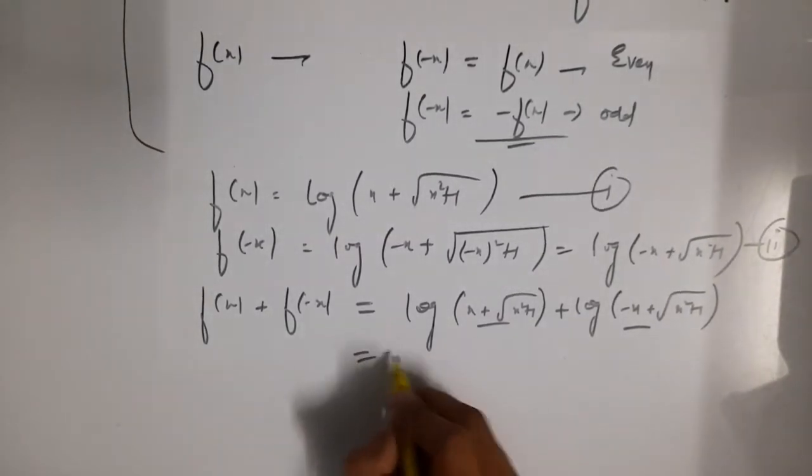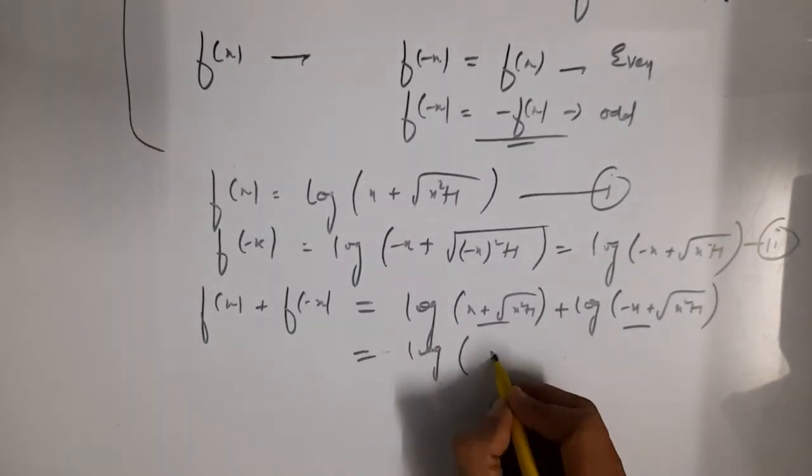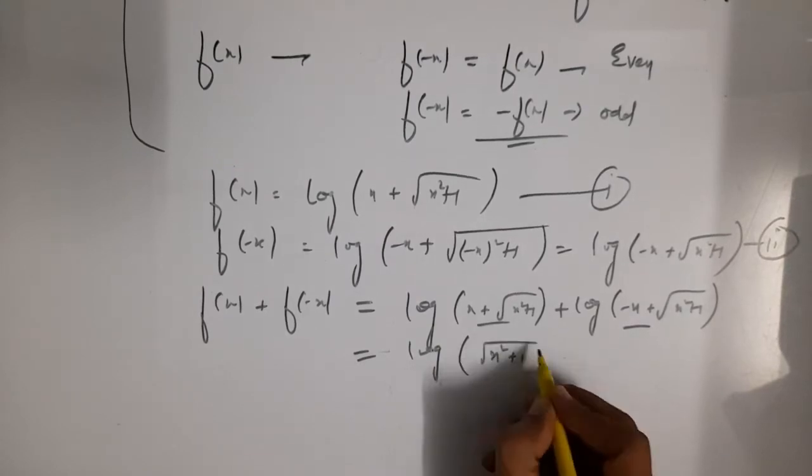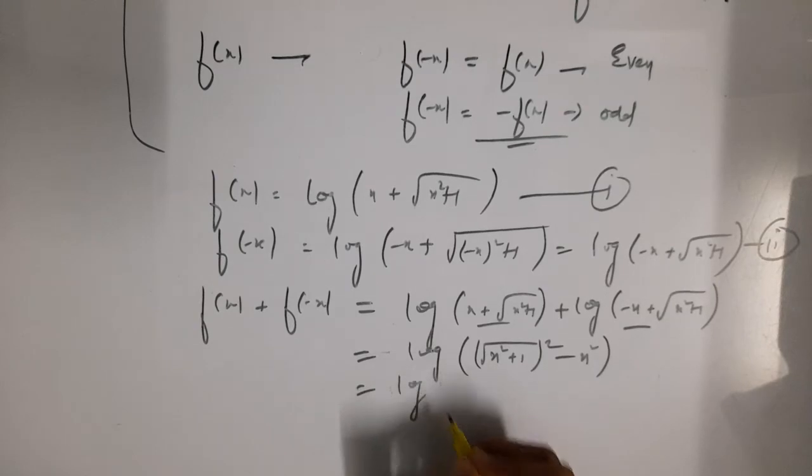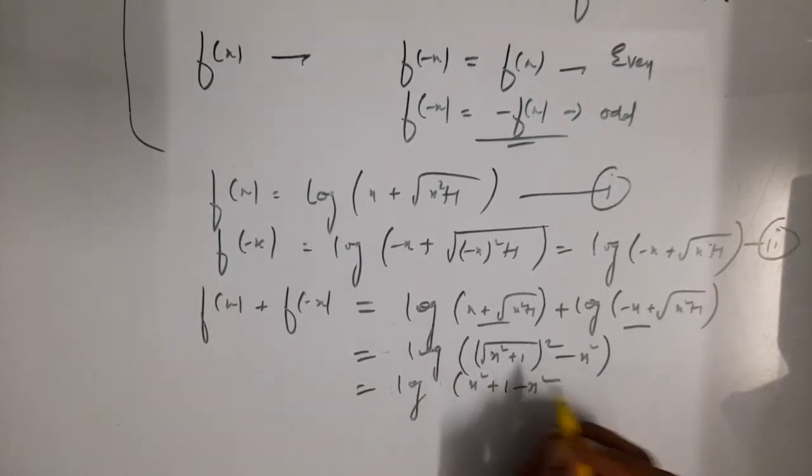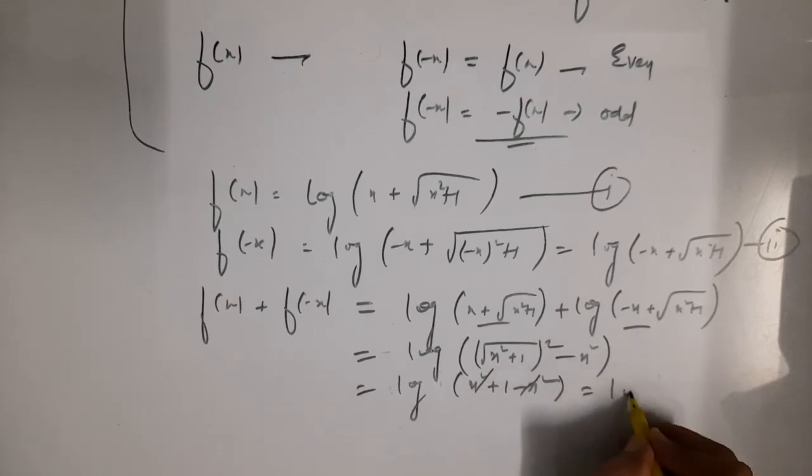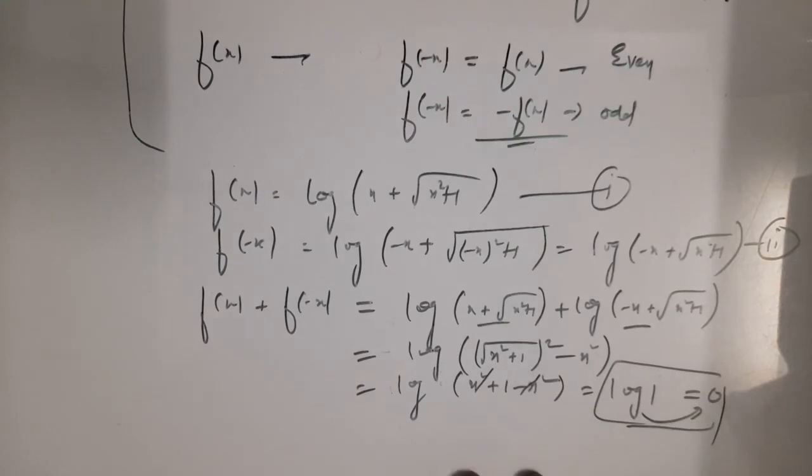If we get one addition, we will simply multiply them: x square plus root x square minus x square. This is log of x square plus 1 minus x square which is nothing but log 1 which will be 0.